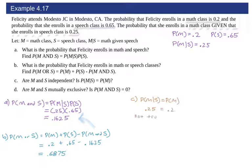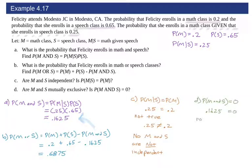For part C, we want to know if they're independent, so we check if the conditional equals the plain probability. We see that 0.25 is not equal to 0.2, so these are not independent — they should be equal to one another. For part D, to check mutual exclusivity, P(M and S) should equal 0. We calculated that from part A and it's not 0, so M and S are not mutually exclusive either.